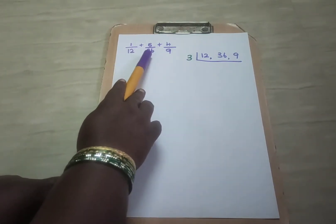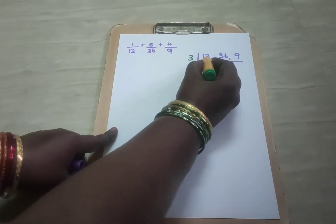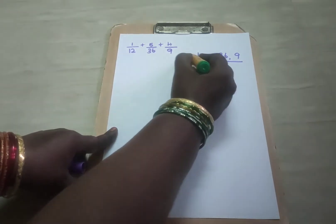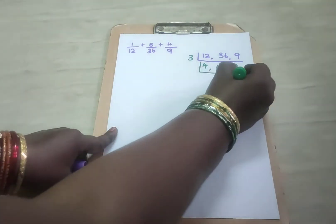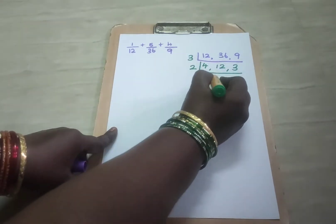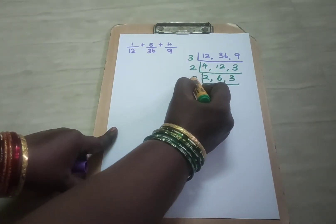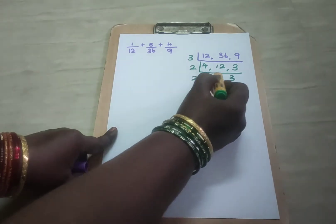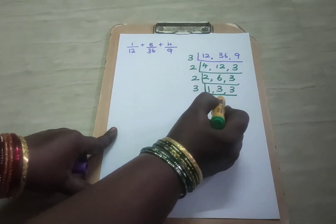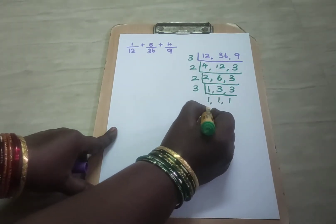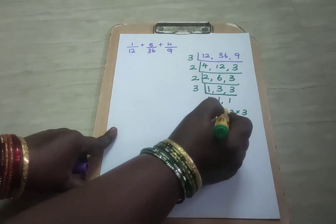What are the numbers? 12, 36, and 9. By using prime factorization we will find out. Using the 3 table: 4 threes are 12, 12 threes are 36, 3 threes are 9. Next using 2: 2 twos are 4 and 2 twos are 12, and this 3 comes as it is because 3 will not go in the 2 table. Again using 2: 1 two is 2 and 3 twos are 6, and the 3 comes as it is. Last step using 3: 1 three is 3 and 1 three is 3. Then multiply all these numbers: 3 into 2 into 2 into 3 — that is 36. So your LCM is 36.